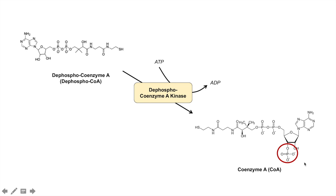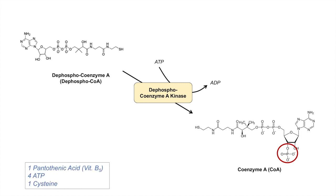In the process of all of these steps, what have we used to actually make coenzyme A? One, we used one molecule of pantothenic acid or vitamin B5. In the entire process, we used four ATP — a few of them got added on as phospho groups, and one had to be used as an energy source. And another thing that we needed was the amino acid cysteine. So all of these precursors — pantothenic acid, ATP, and cysteine — are required to produce coenzyme A.